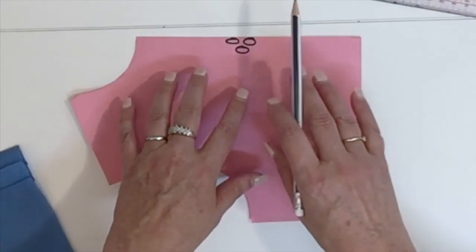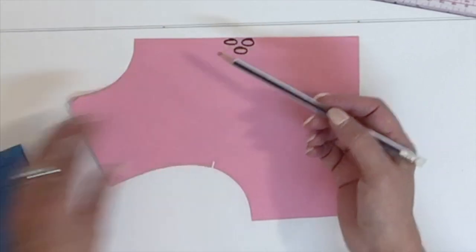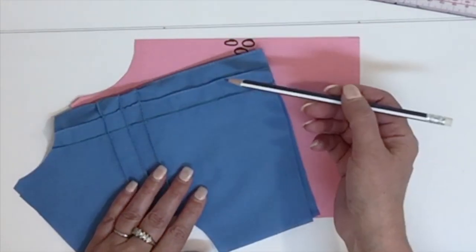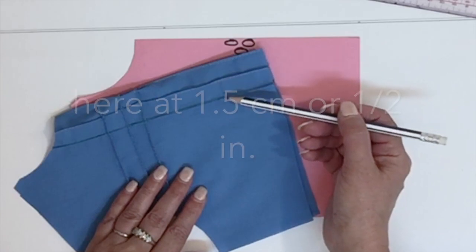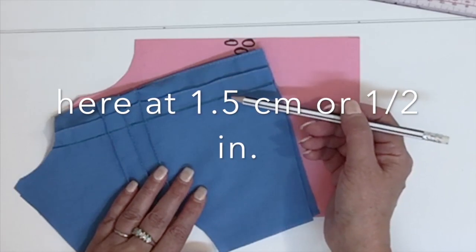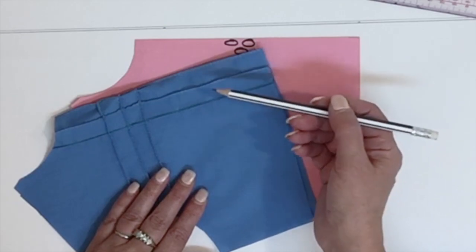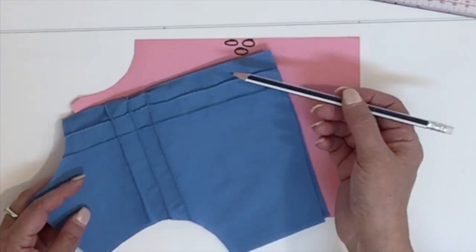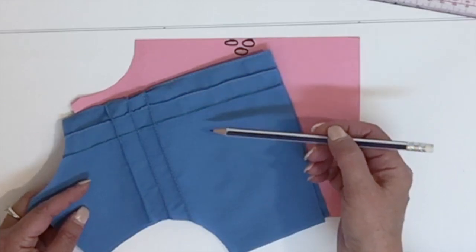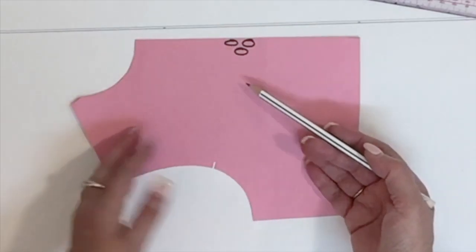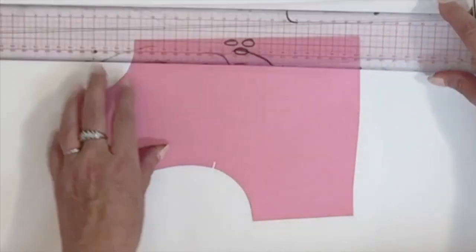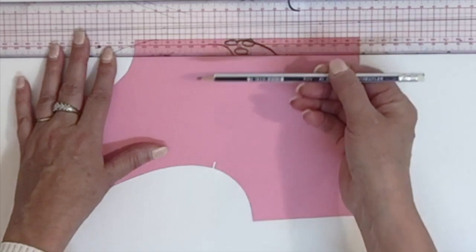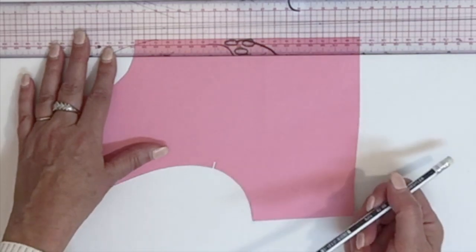The next thing you're going to do is decide the distance that you want between your little pin tucks. On this example I did them at about 1.5 centimeter distance, but it's all up to you. It's a matter of style. It could be 2 centimeters if you want. Then you also have to decide how many tucks that you want, and on your block you're going to trace lines parallel to the center front at the distance that you want and the amount of lines that you want.